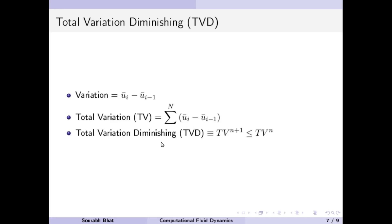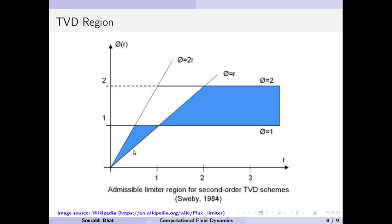Total variation diminution is defined as the total variation at time level n+1 being less than or equal to the total variation at time level n — meaning the total variation should not grow in time. Total variation is simply the change happening between neighboring cells summed over the full domain. Now let us combine total variation diminution with the limiters.